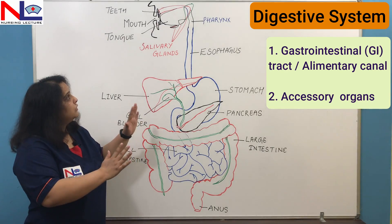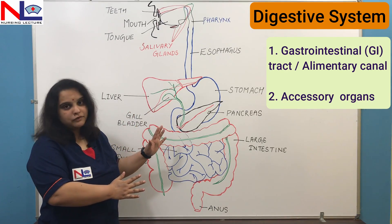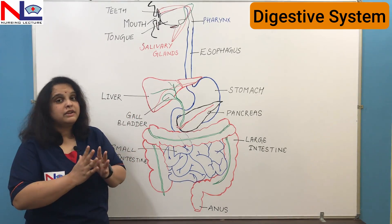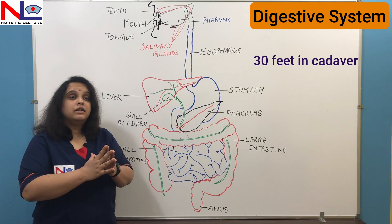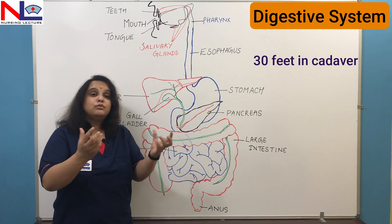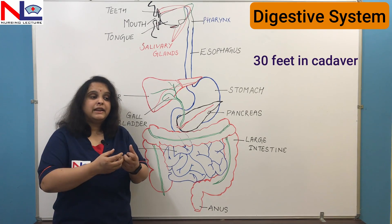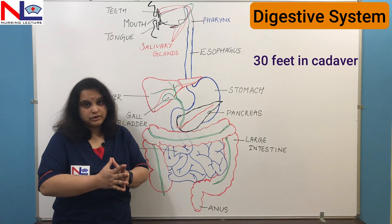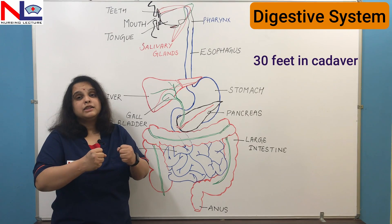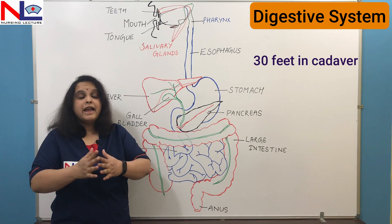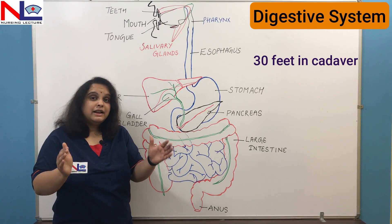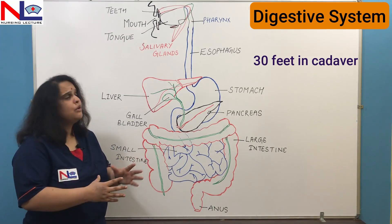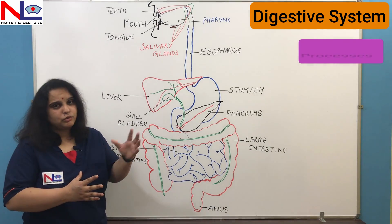The length of the GI tract in a cadaver is about 30 feet, because at the time of death the smooth muscles relax, making the tract longer. In a living person, smooth muscle tonicity is maintained, which results in a shorter length compared to a cadaver.